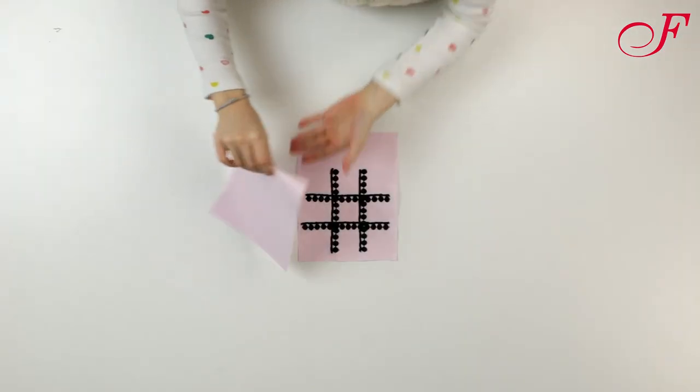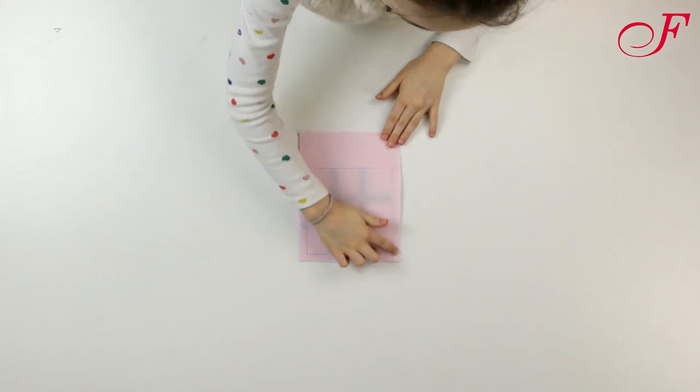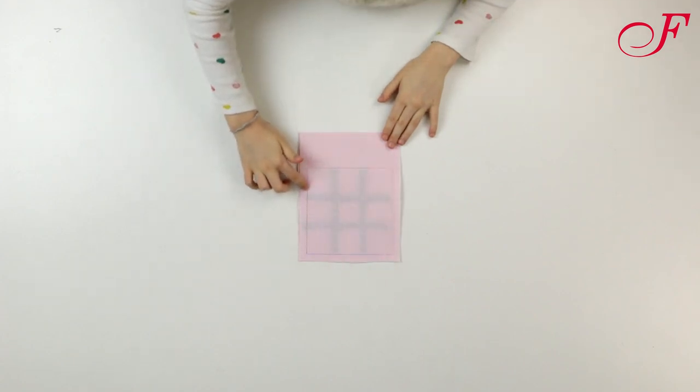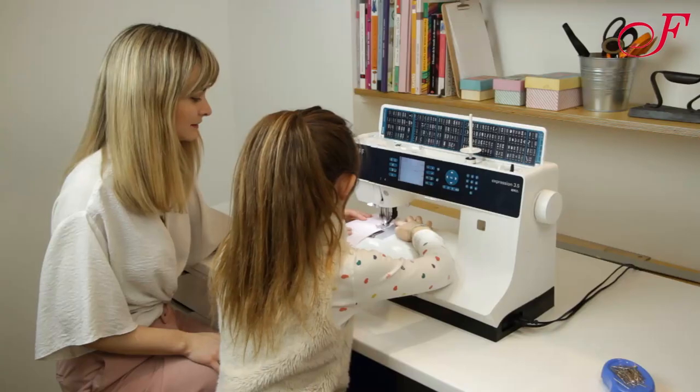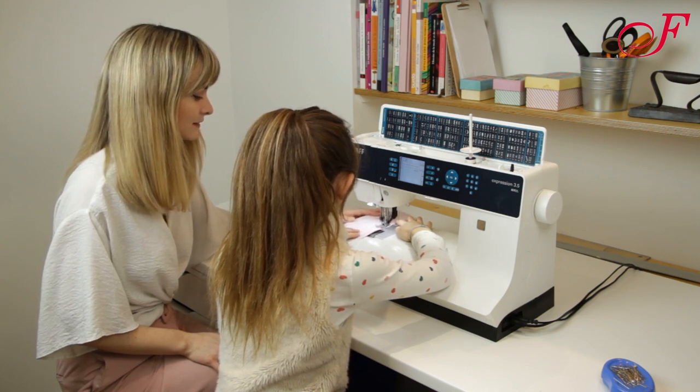We are now going to sew the pouch. Lay the 2 rectangles right sides together. You are going to stitch on these 3 sides, beginning and ending from 5 cm down the opening. You can trace the line if your child wants to try the machine stitch with you.